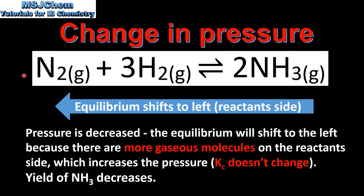If pressure is decreased, the equilibrium will shift to the left because there are more gaseous molecules on the reactant side, which increases the pressure of the system. Once again, the value of Kc does not change and the yield of ammonia decreases.